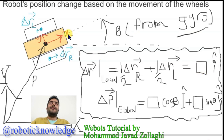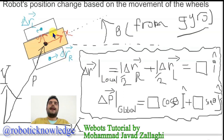As a result, we have the knowledge of the change of position of this center point, but it is measured at the local frame — at this red frame attached to the mobile robot.